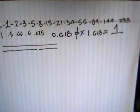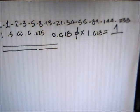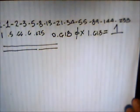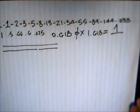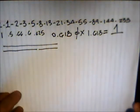1 times 1 is 1, but 0.618 times 1.618 also equals 1. Now we're going to jump to another sheet of paper here.